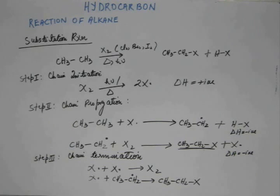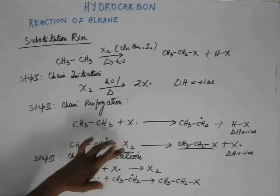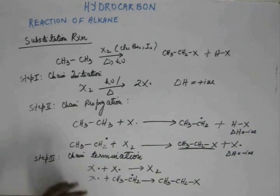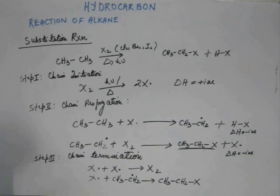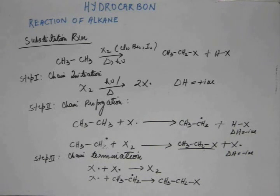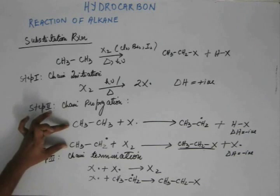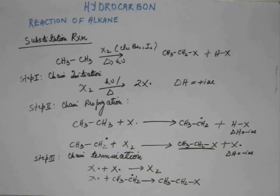These two steps are desirable — the chain propagation steps. Initially, X-dot will be present in small quantity but the number of ethyl free radicals will be larger, so probabilistically the ethyl free radical will react with X-dot. But as the reaction proceeds and X-dot starts to be consumed, when the number of X-dot decreases, there is a finite chance of the ethyl free radical reacting with X-dot, and finally the reaction will terminate. These are the chain propagating steps and these are the chain terminating steps — that is how it happens.